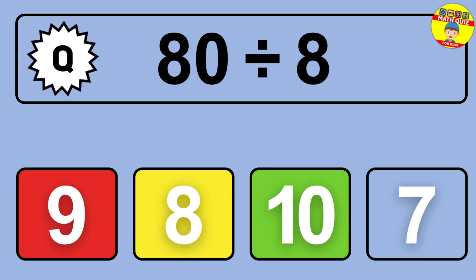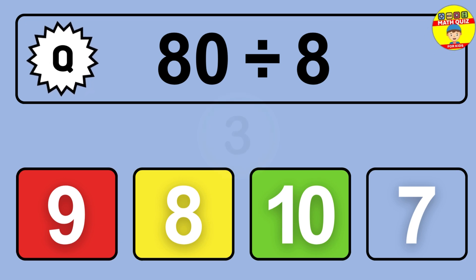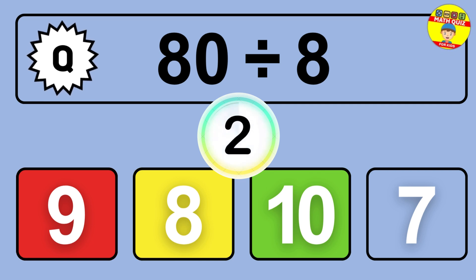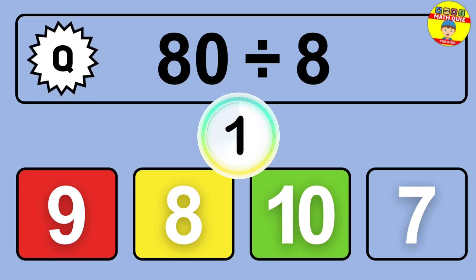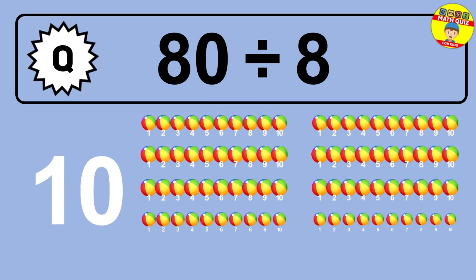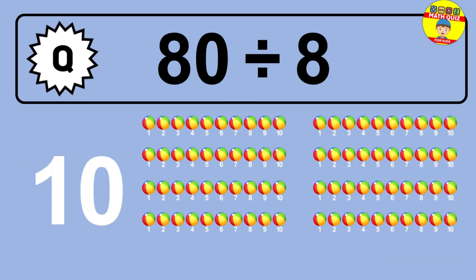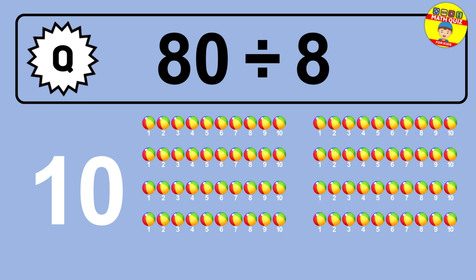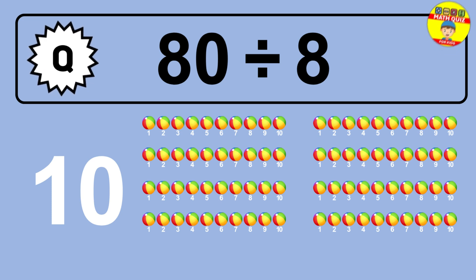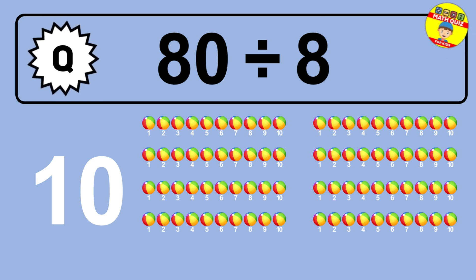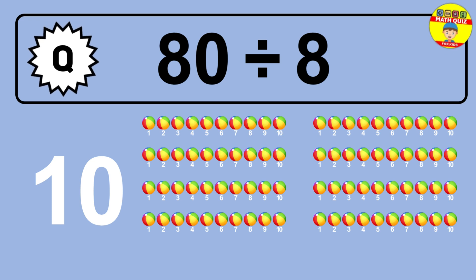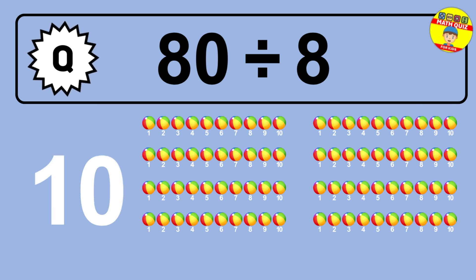What is 80 divided by 8? Picture this — you have 80 objects to divide into groups of 8. How many groups can you make? Let's think about it. Ready to find out? Let's break it down. Let's imagine you have 80 objects. Can you picture them lined up? Now think about splitting them equally.